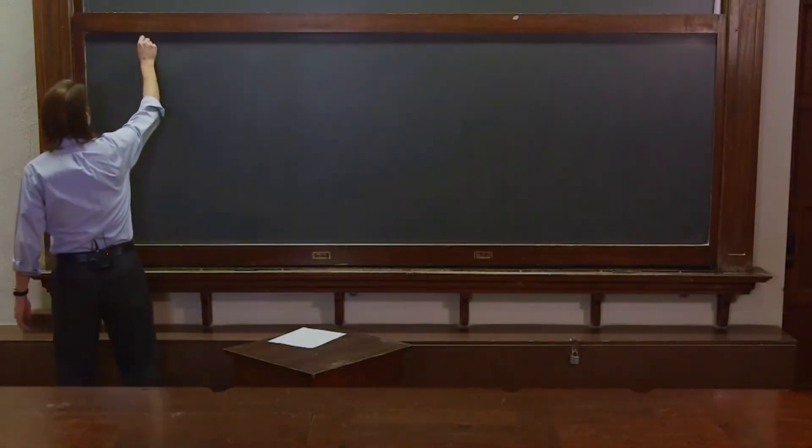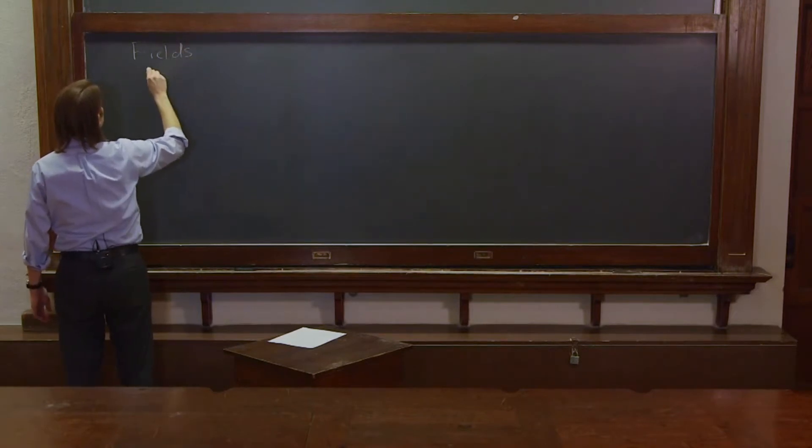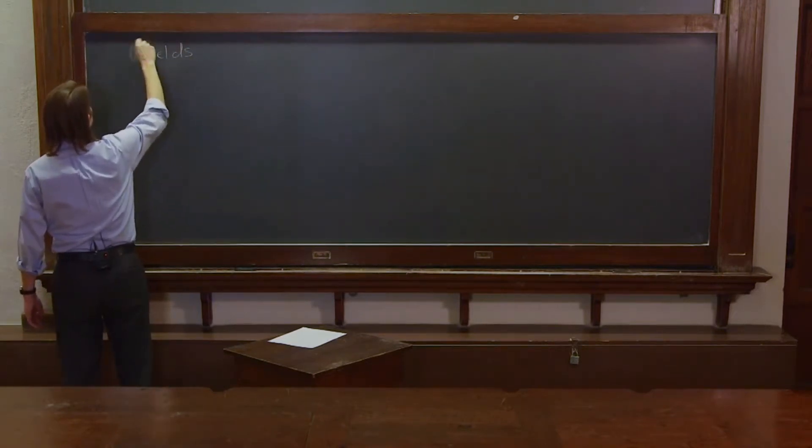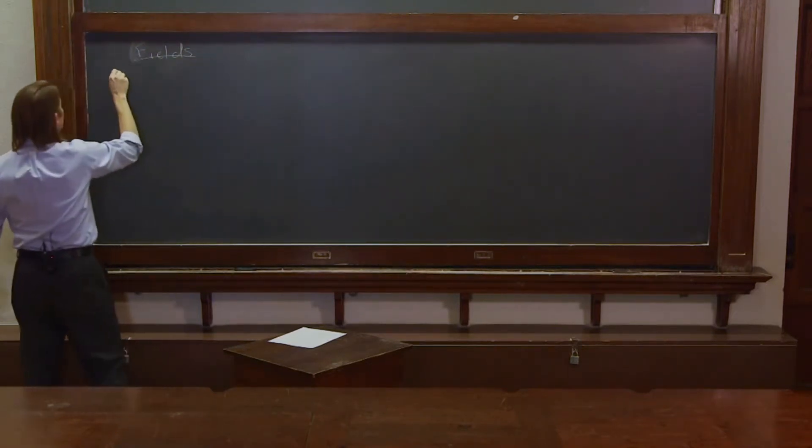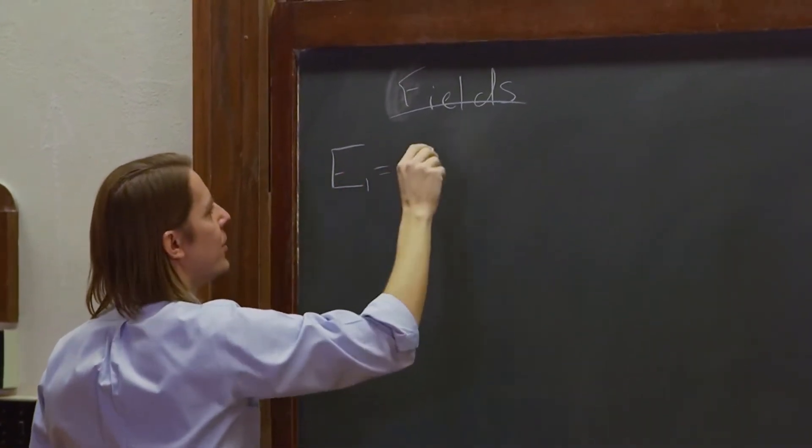Okay, let's write some fields and see what is going to happen to the fields. E1 is that first one that reflects. It just had an R, a single reflection.